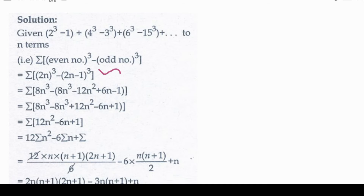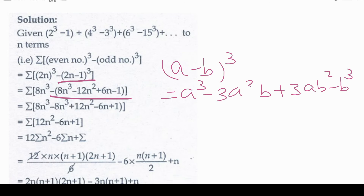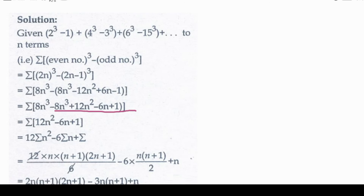The odd numbers in the series are going to be 2n minus 1. So the nth term is 2n, the whole cube, minus 2n minus 1, the whole cube. After expansion, the two terms cancel, simplifying the expression.